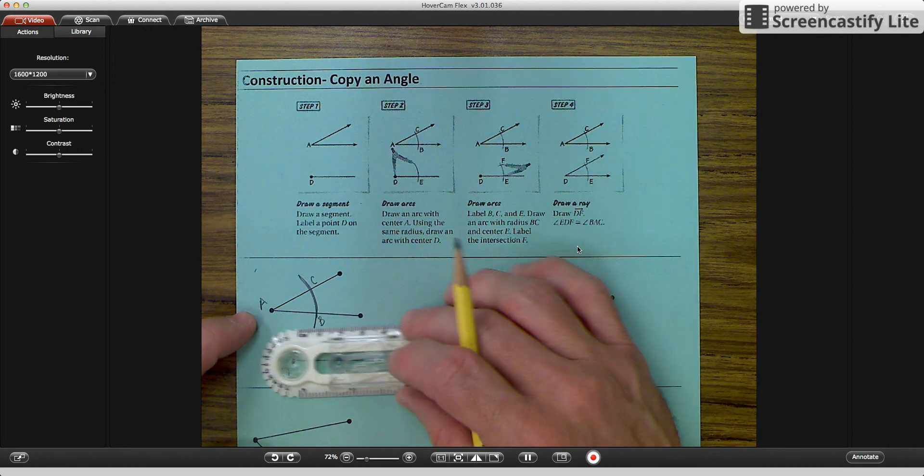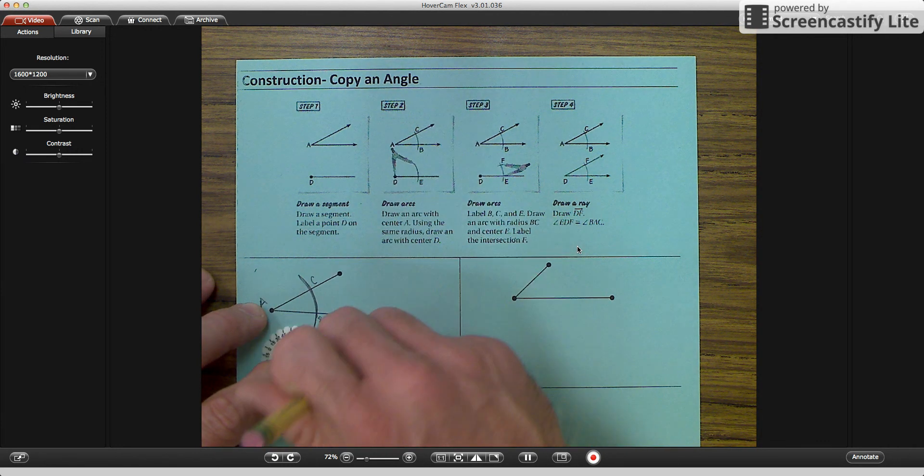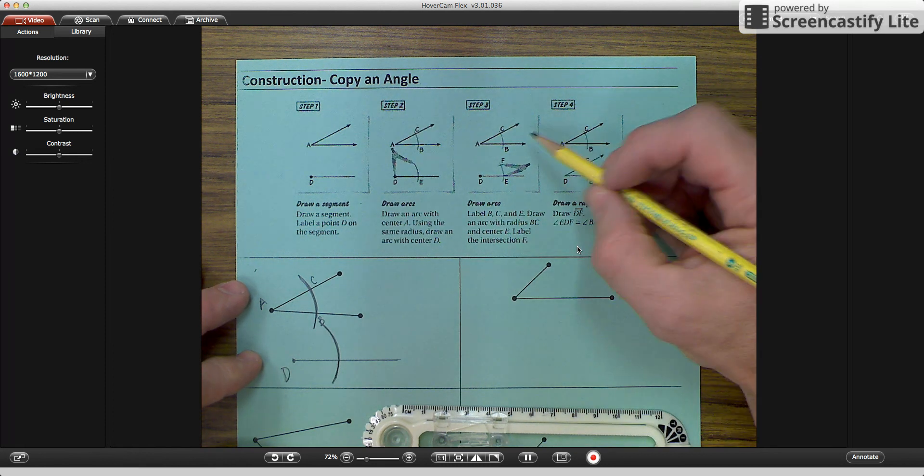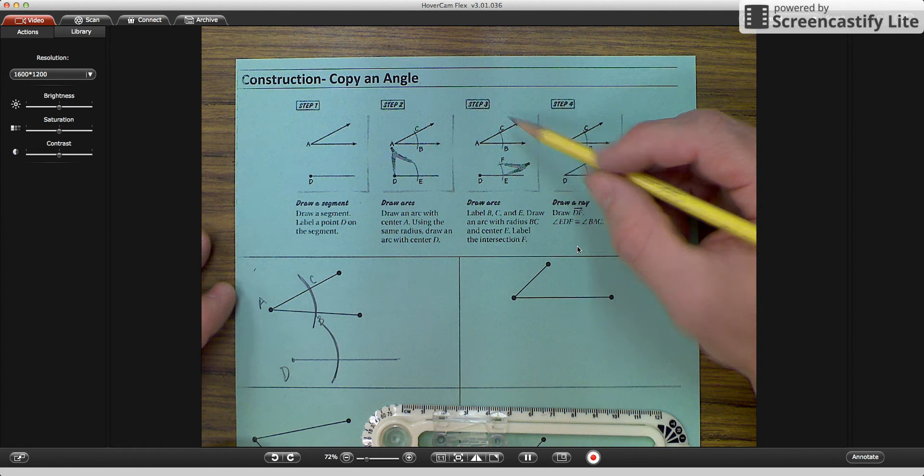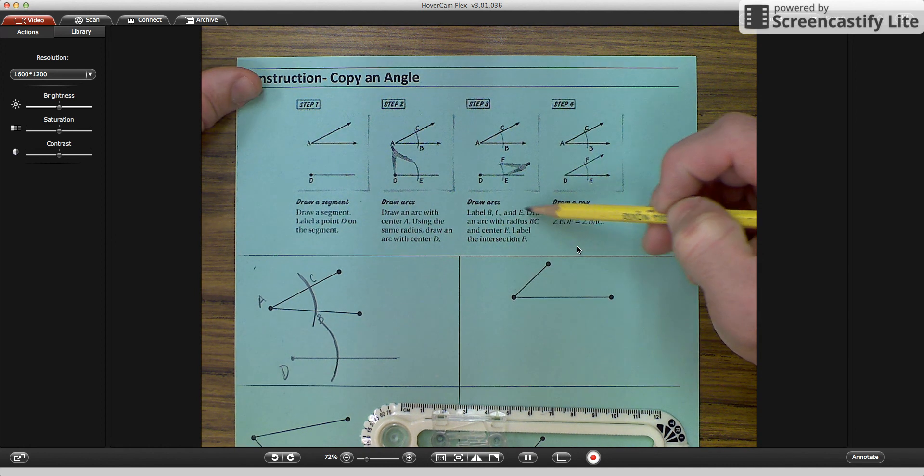And I'm going to draw a similar arc down here on the new angle area. The third thing, step three says label B, C, and E.